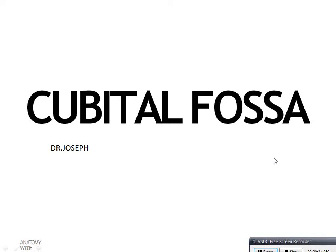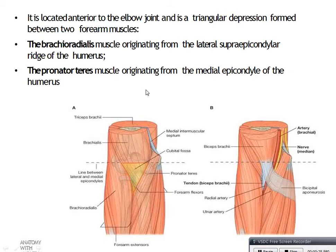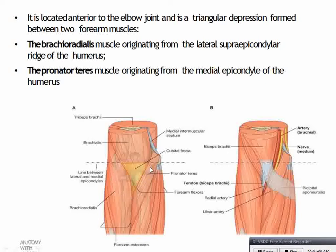Cubital fossa is located anterior to the elbow joint and there is a triangular depression formed between two forearm muscles. It is seen in front of the elbow joint and is formed between two muscles: brachioradialis laterally and pronator teres medially. Brachioradialis originates from the lateral supracondylar ridge of the humerus, and pronator teres originates from the medial epicondyle of the humerus.